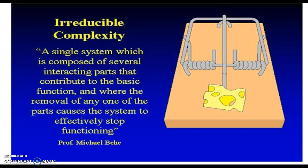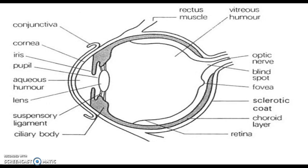If you remove just one part of a mousetrap it no longer functions. Michael Behe, one of the foremost apologetic scientists who argues for intelligent design, defines irreducible complexity as a single system composed of several interacting parts that contribute to the basic function, where the removal of any one part causes the system to effectively stop functioning.